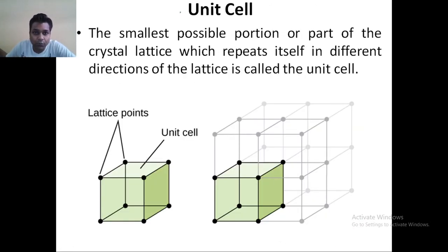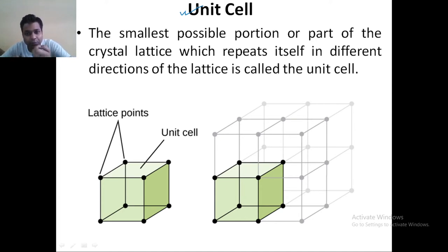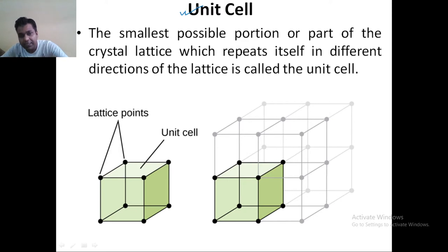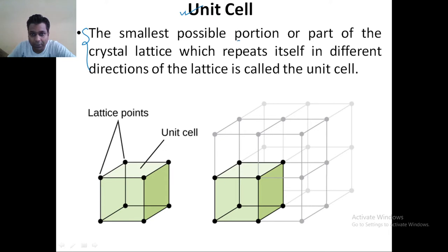Moving towards your unit cell — what we understand from the term unit cell. Cell means the smallest unit which represents itself in the complete structure. The same way we can define in chemistry also: the smallest possible portion or part of the crystal lattice which repeats itself in different directions of the lattice is called a unit cell.